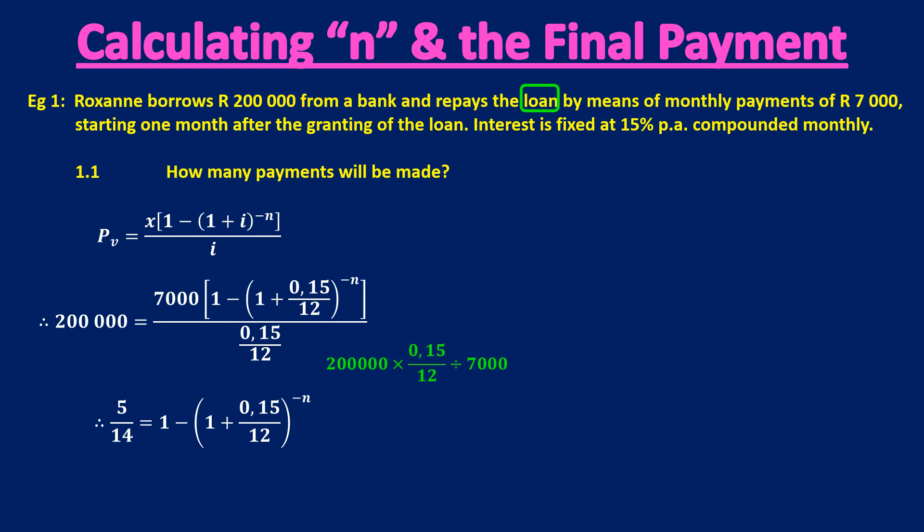Your calculator should give you a nice common fraction. Try not to go to decimals. First of all, it's inaccurate. And secondly, it's a little bit more difficult to use. So if your calculator answer is a common fraction, keep it.